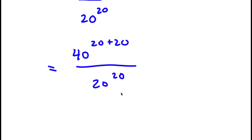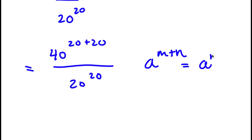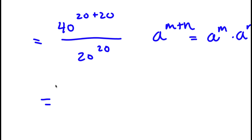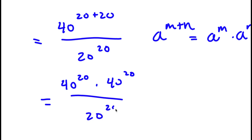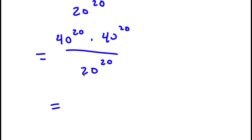If I have something in the form a to the power of m plus n, this is equal to a to the power of m times a to the power of n. So 40 to the power of 20 plus 20 is the same thing as 40 to the power of 20 times 40 to the power of 20, all over 20 to the power of 20. I can take one of those 40 to the power of 20 terms outside the fraction, rewriting this as 40 to the power of 20 times 40 to the power of 20 over 20 to the power of 20.